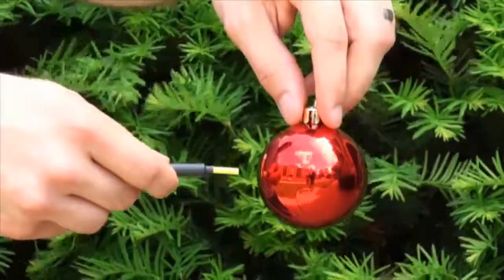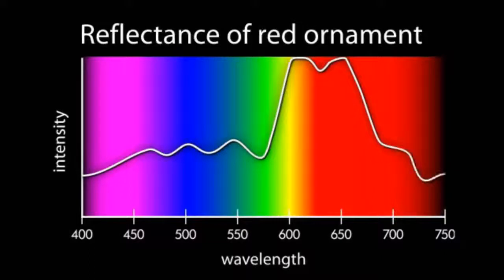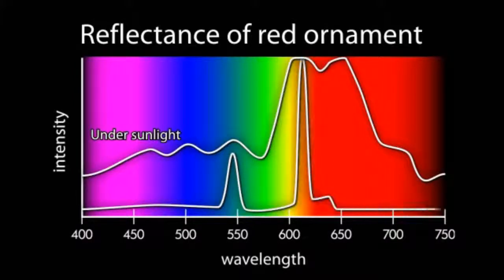Here is that red ornament under sunlight. Now it is easier to see that the ornament does reflect red wavelengths of light. Compare how the ornament's reflected light is different under the white light bulb than when it is under the sun. This illustrates how the properties of light are not always consistent with what we see.